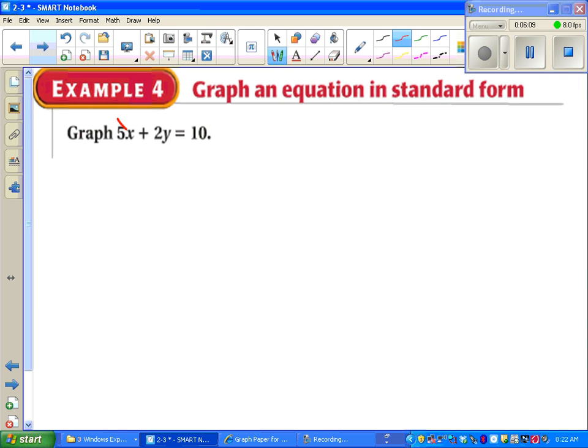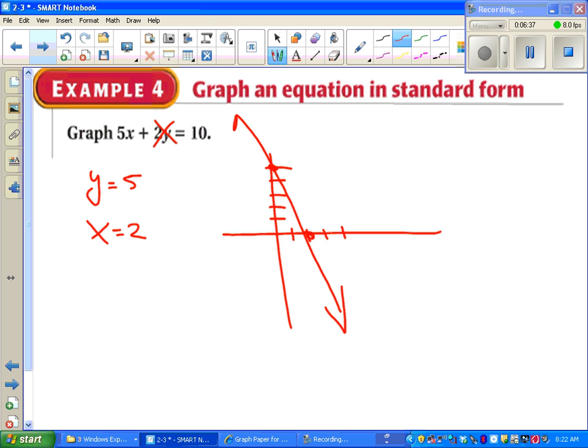To figure out our y-intercept, we just pretend that x isn't there, because we're plugging in zero. I see 2y equals ten, so y must equal five. Similarly, if I want my x-intercept, I plug in zero for the y, and I see 5x equals ten, so x must equal two. I can draw a line. X equals two, y equals five. Draw a line, done.